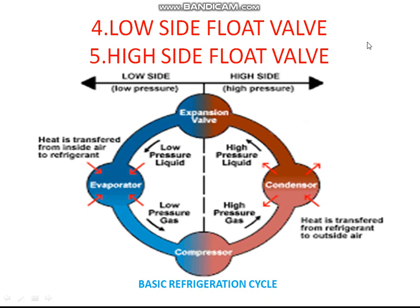What is low side and high side? In the refrigeration cycle, there are two pressure systems — one high pressure and one low pressure system. The compressor and condenser are high pressure gas. The condenser and expansion valve are high pressure liquid. This is the high pressure cycle. The evaporator side is low pressure liquid and the compressor inlet is low pressure gas.